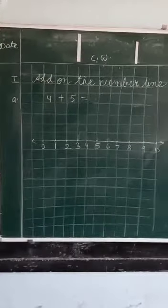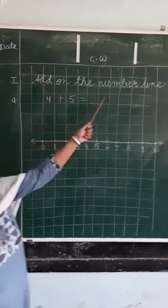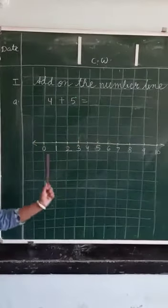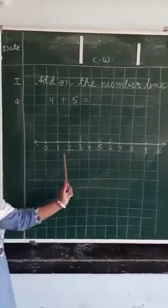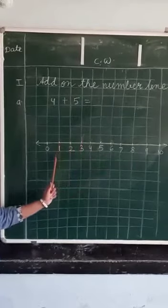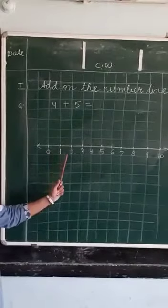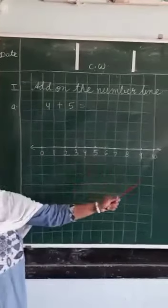Our today's topic is add on the number line. Let us first understand what is a number line. A number line is a line with numbers written on it. These numbers are equidistant and the numbers are 0, 1, 2, 3, 4 and so on.